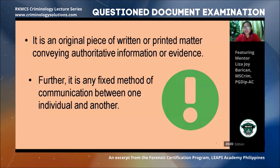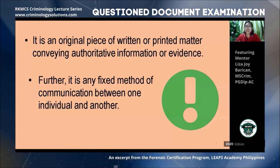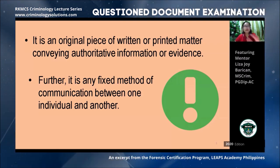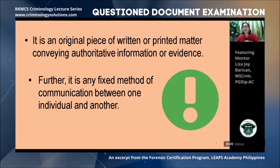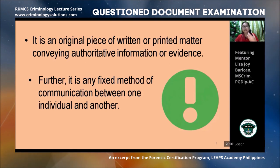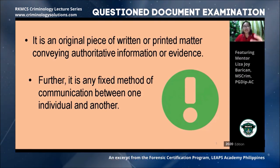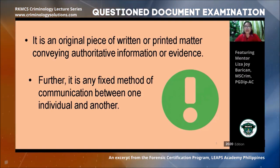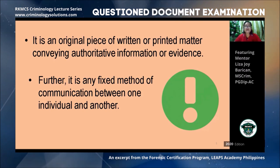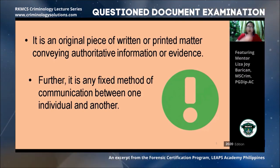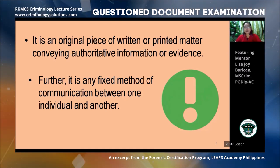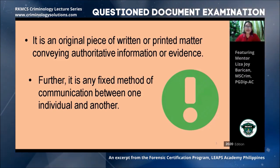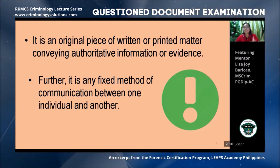The content of such a document proves or provides information. For example, a marriage license or marriage certificate, even a birth certificate — it conveys authoritative information about a particular person, such as date of birth, citizenship, and gender. Aside from that, a document is any fixed method of communication between one individual and another. A common example is personal letters or love letters — the content communicates, especially to the person reading.